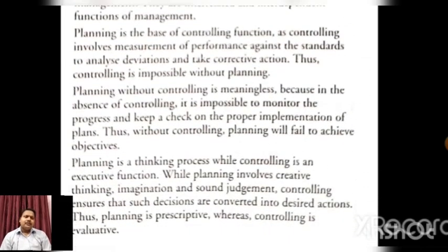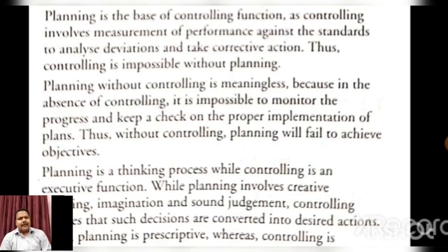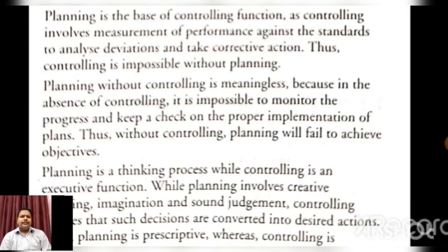Planning के बिना controlling हो सकता है? No, क्योंकि in the absence of controlling it is impossible to monitor the progress and keep a check on proper implementation of the plan. Planning chapter में आपने पढ़ा था कि the last step of planning is follow-up — उसमें plan को implement करते समय check करते हैं कि plan according to objective successful रहा है या unsuccessful, और वो with the help of controlling पता चलता है। यानि controlling ही help करता है यह बताने के लिए कि जो plan बनाया है उसका proper implementation हुआ है या नहीं।